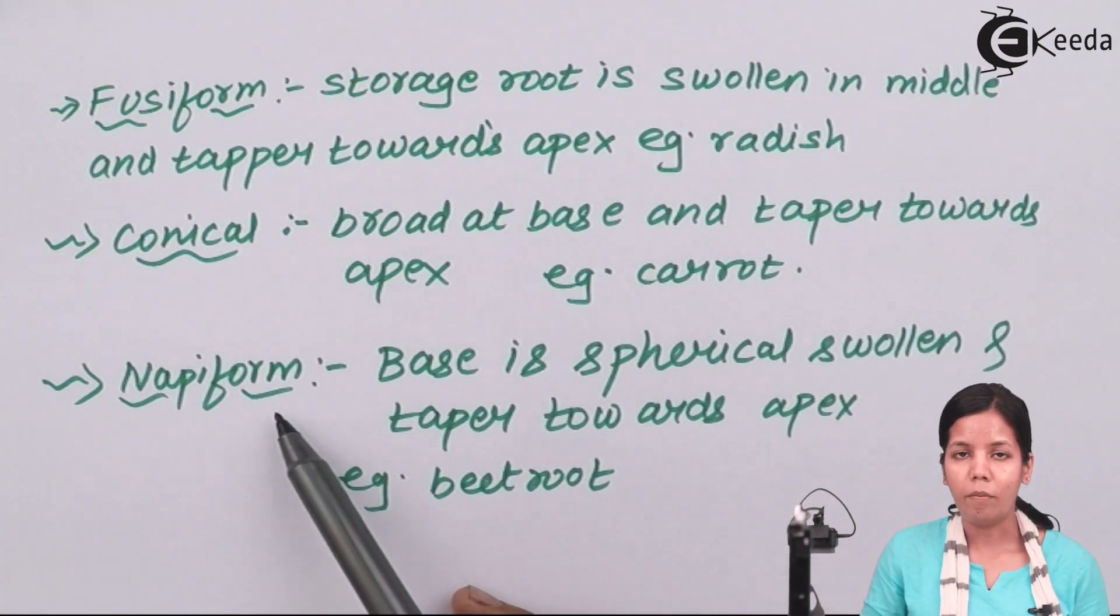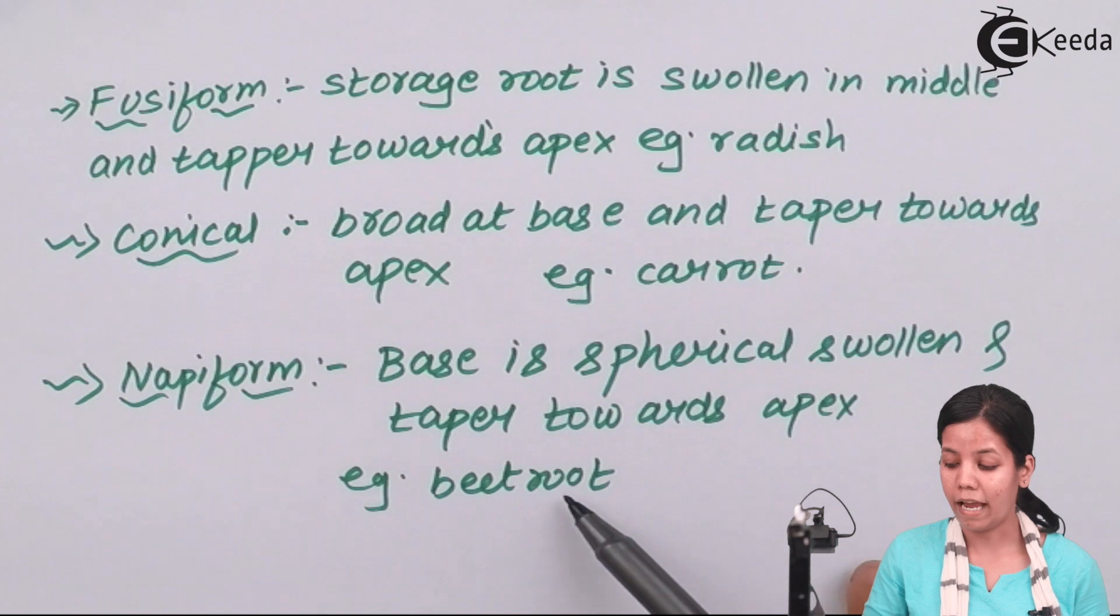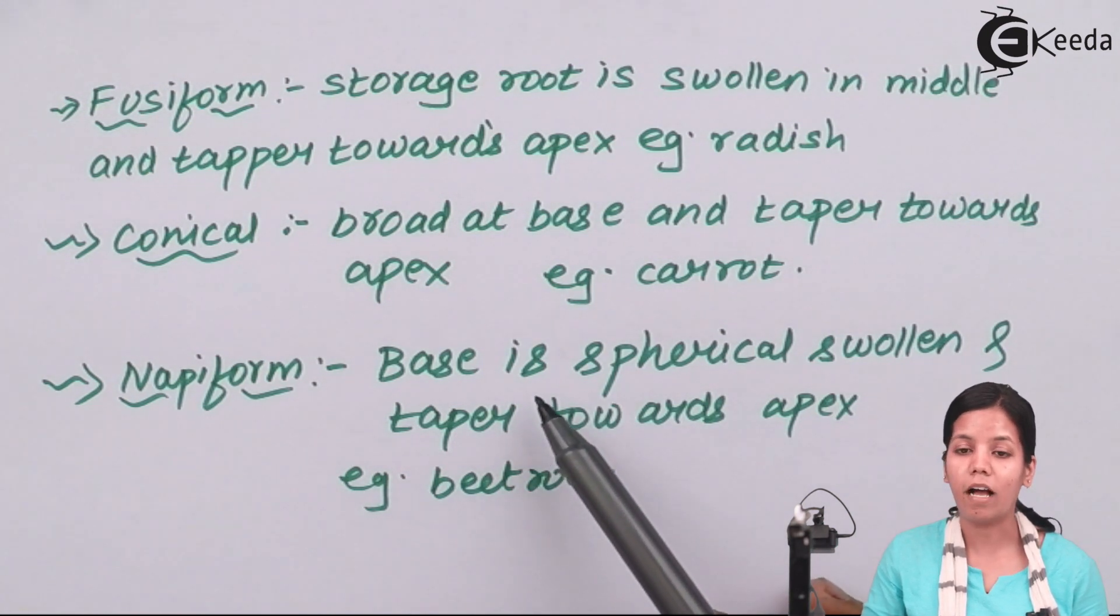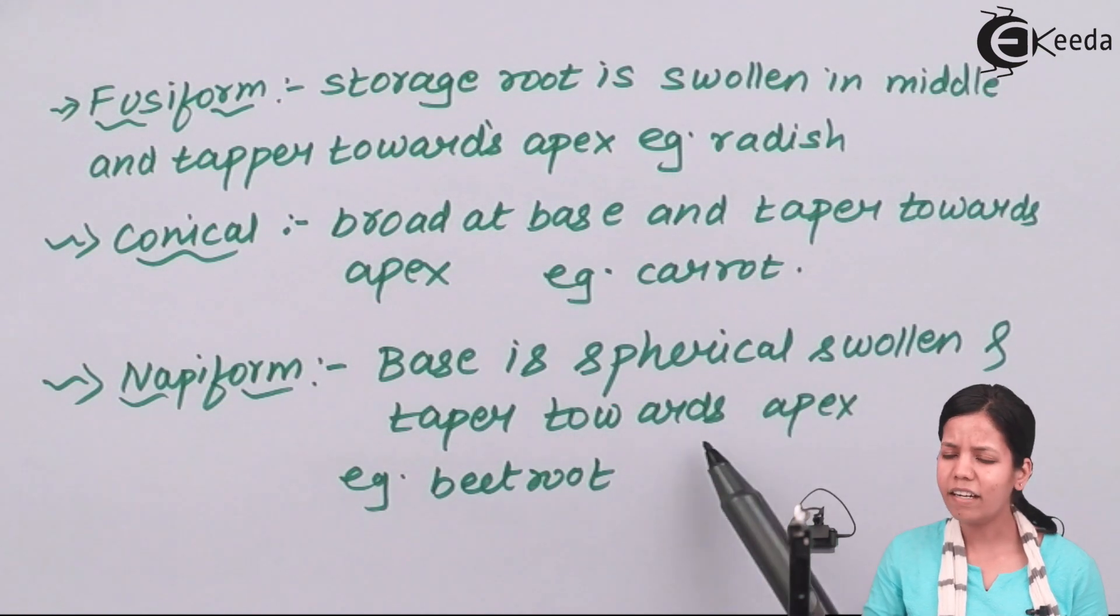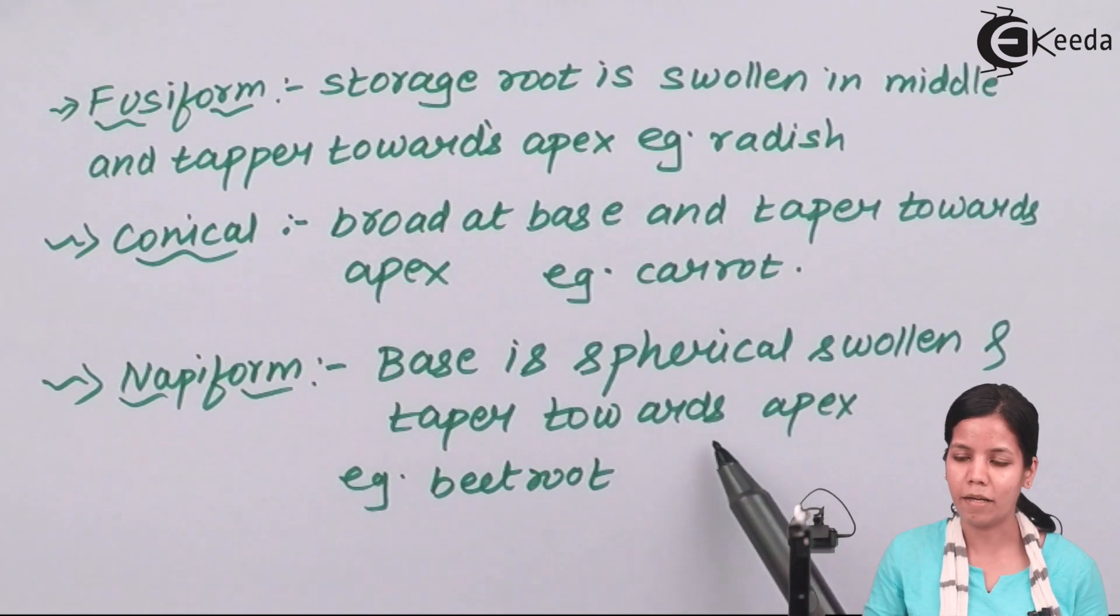Nappy form modification is found in beetroot. The base of the beetroot, or you can say the upper part, is spherical and swollen and round, and it tapers towards the apex or the ending part.